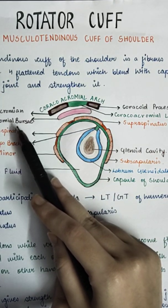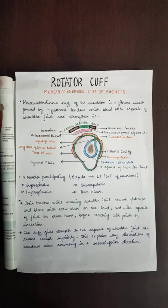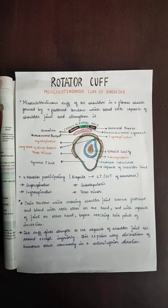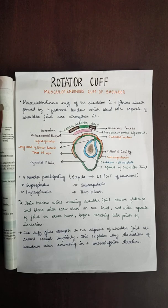The sub-deltoid bursa is also shown in the diagram. Inflammation of this bursa is also associated with rotator cuff pathology — this is called bursitis. The muscle or tendon can also strain or tear due to overuse or traumatic injury. So there are three main rotator cuff injuries: tendinitis, bursitis, and strain or tear.